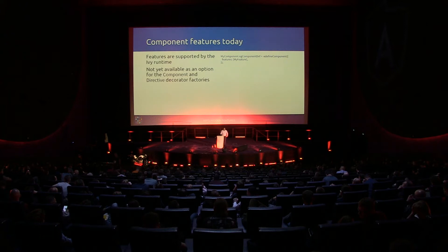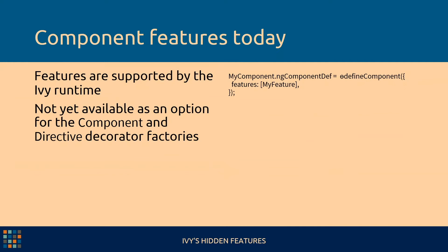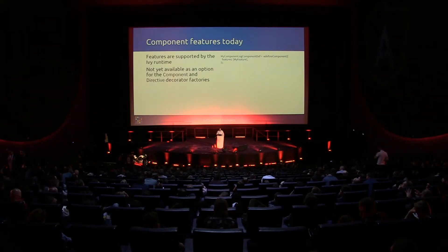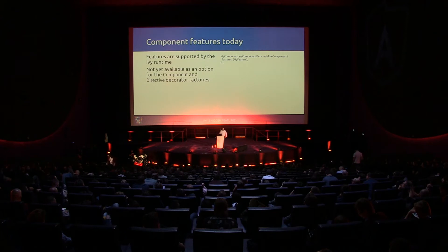Features are supported by the Ivy Runtime today, but they are not in the component metadata. So what we saw before, where I added features with user name to the features option — that's not actually available today. But we can start experimenting anyways. This is what Ivy does with the component definition today: it stores them as a static property on a component class and adds in the list of features. So if we just add a list of features at runtime, the Ivy Runtime will pick it up and apply the features.